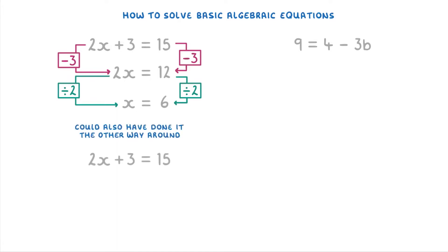Now you could also have done it the other way around, by doing the division first and then the subtraction. This normally ends up being a bit trickier though because when you divide by 2 you have to divide everything by 2.